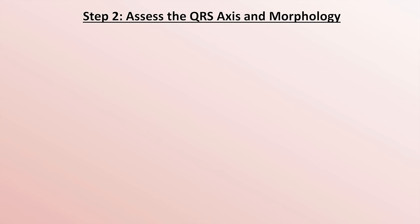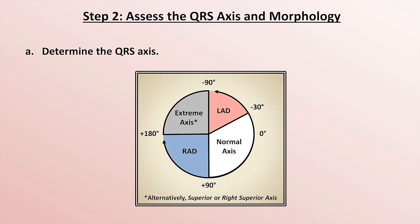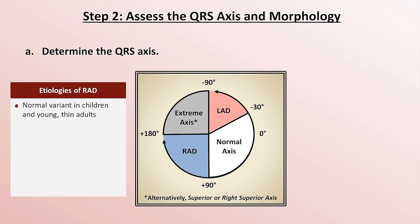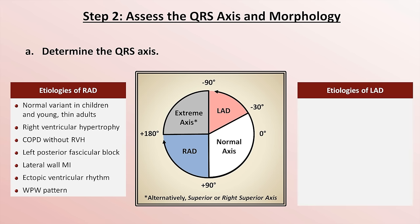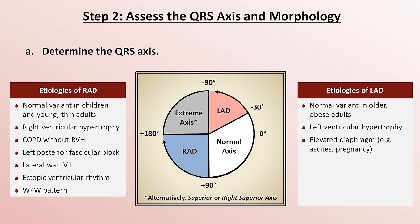Let's move on to step two: assess the QRS axis and morphology. A normal QRS axis for an adult is between negative 30 and positive 90 — not 0 to 90, as commonly claimed by dubious medical texts and various internet sites. Right axis deviation can be a normal variant in children and young thin adults, RVH, COPD, left posterior fascicular block, a lateral wall MI, an ectopic ventricular rhythm, or the Wolff-Parkinson-White pattern. Left axis deviation has analogous etiologies: normal variant in older obese adults, LVH, an elevated diaphragm, left anterior fascicular block, an inferior MI, an ectopic ventricular rhythm, and WPW.